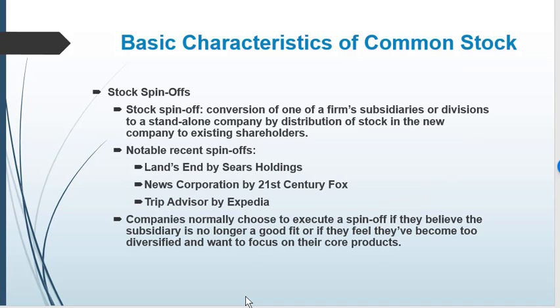Companies sometimes do stock spinoffs — a process where the company takes one of its divisions and distributes stock on that division to the public, essentially divorcing itself from the parent company. This might be done because the division doesn't fit as well, or because the company feels it's too diversified and wants to focus on core products. The people who receive the new shares are the existing shareholders of the parent company.